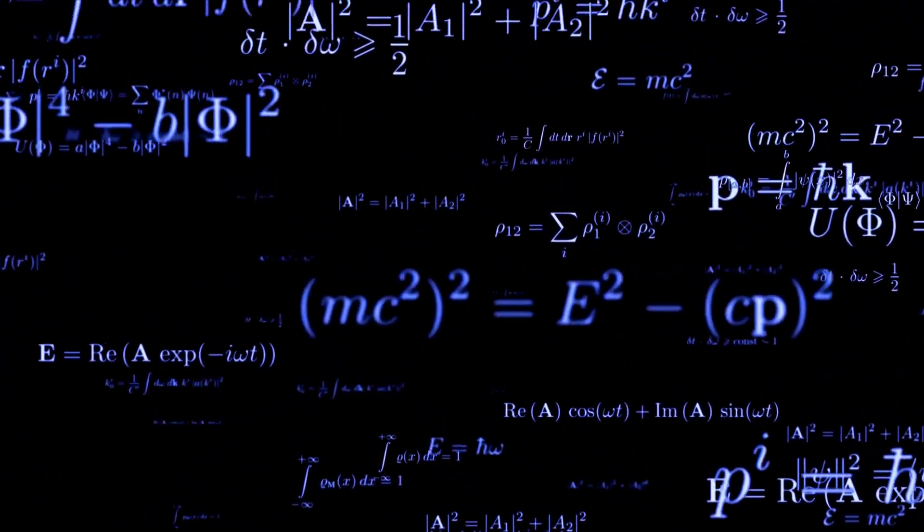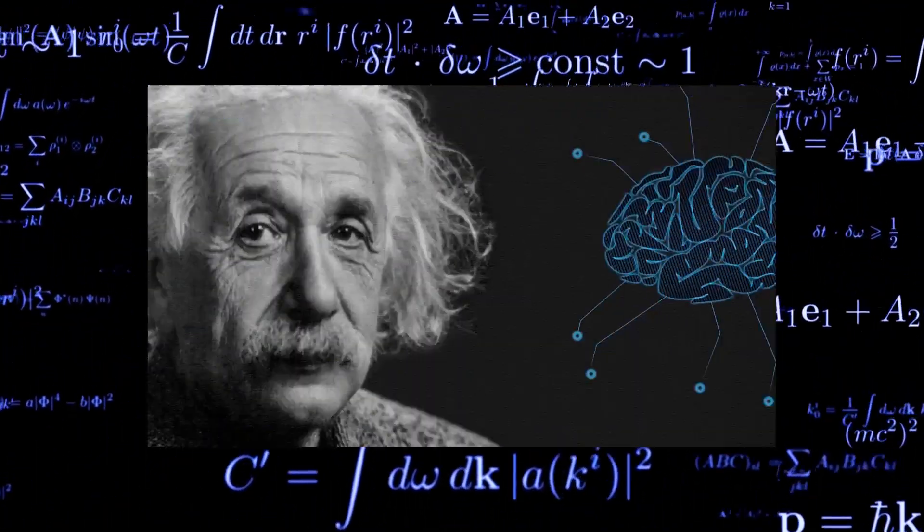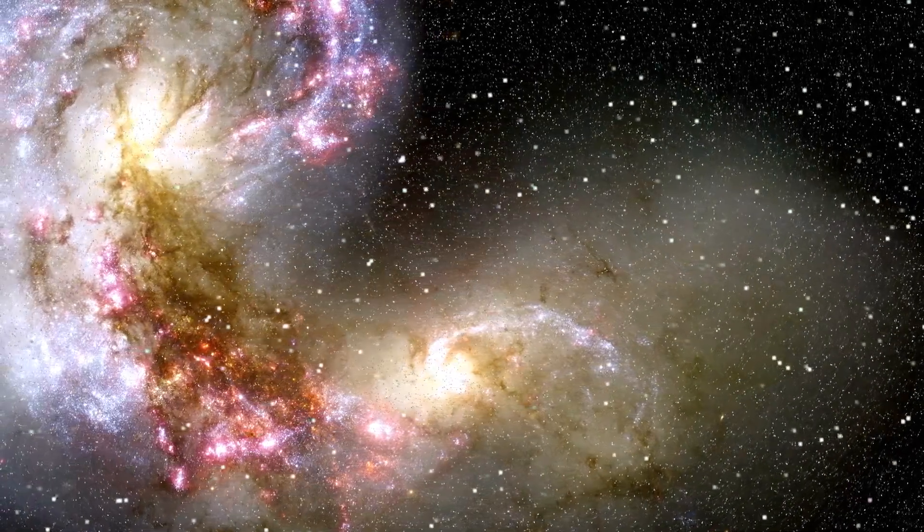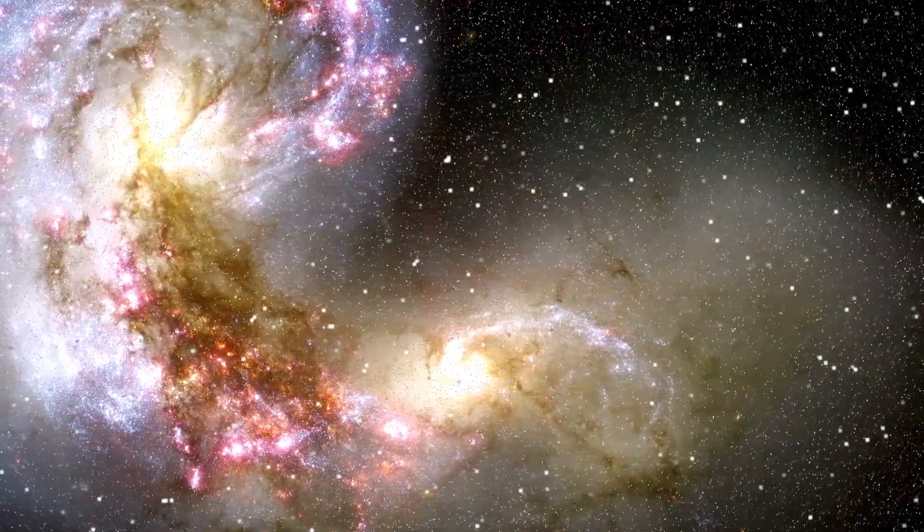And guess who gets another confirmation of this theory? Albert Einstein and his revolutionary theory of general relativity, which predicted that light could be bent by gravity. This observation fulfills Einstein's prophecy, reaffirming the brilliance of his ideas.